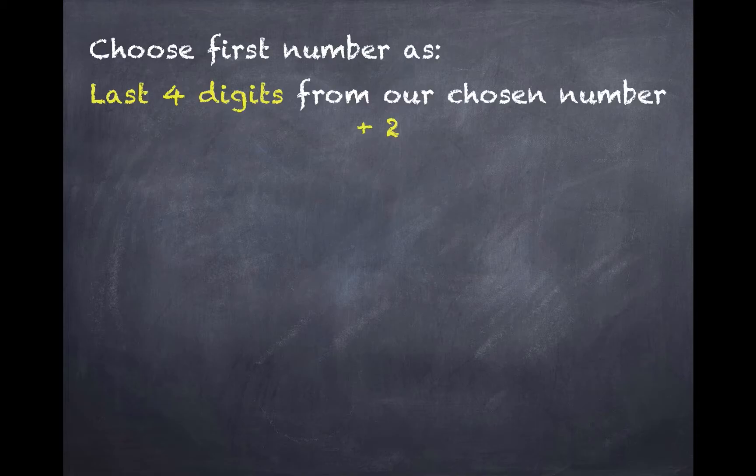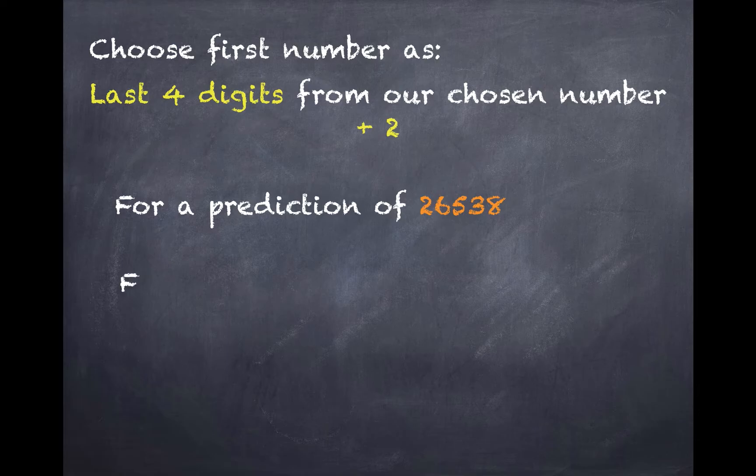Then, we choose our first number by adding the last four digits and 2. So in this case, we'll have 6538 plus 2, so 6540. I'll get to why we add the two.